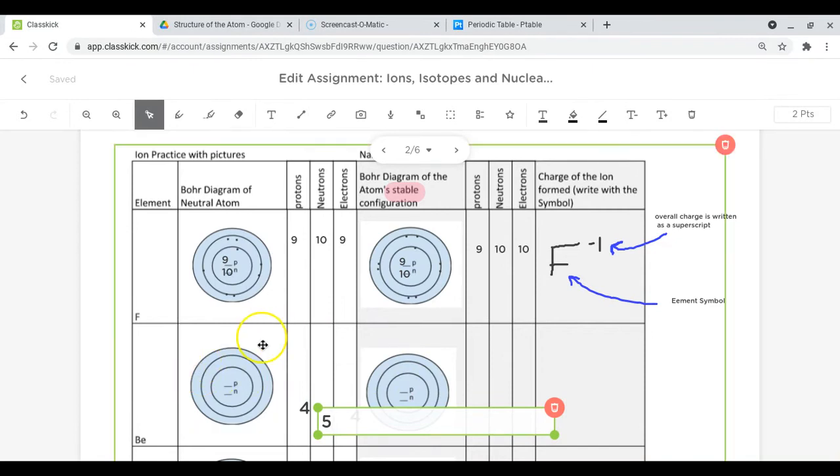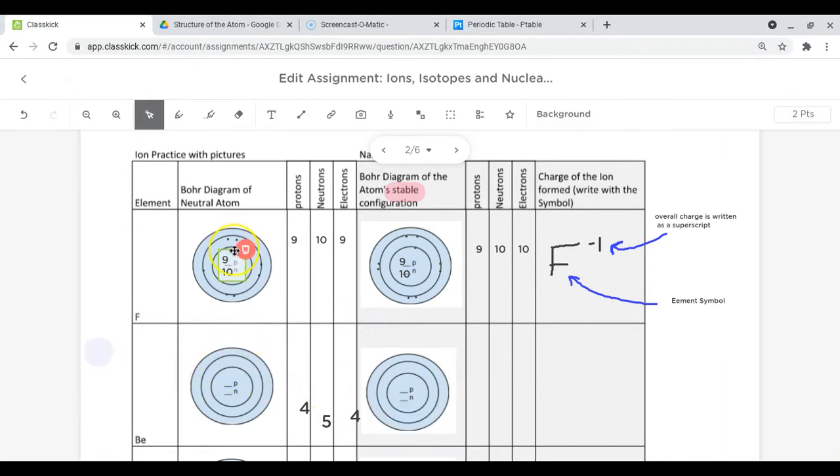The amount of space I have to work with is a little small in here, so I'm going to go ahead and use my drawing tool. You should know that both protons and neutrons go in the nucleus. So I'm going to try to write four in the nucleus and then five in the nucleus for neutrons.